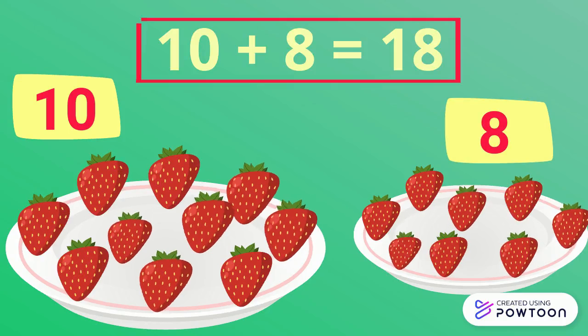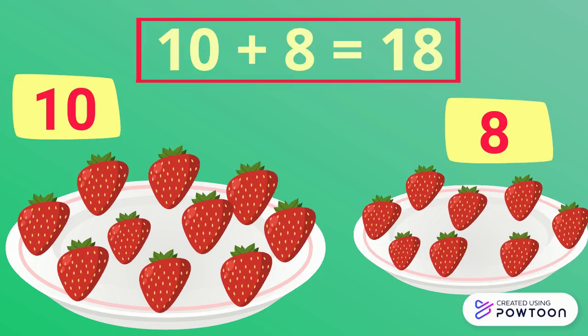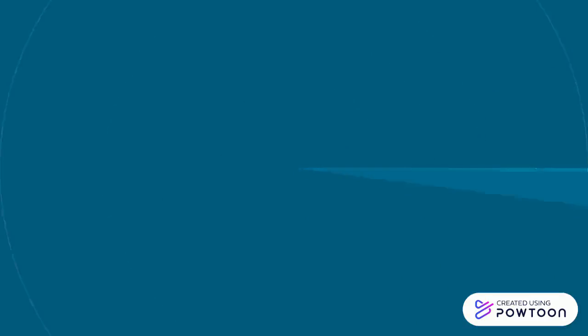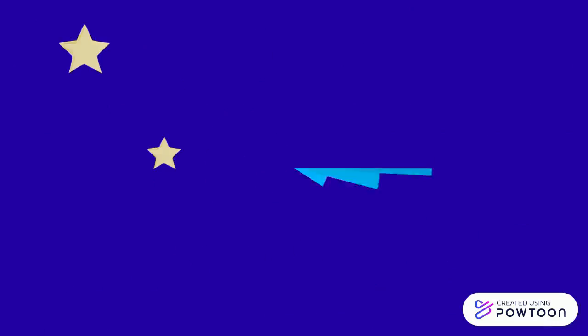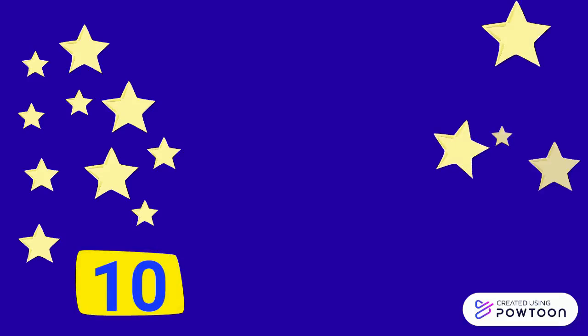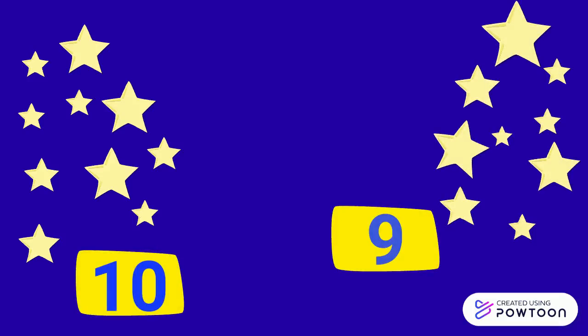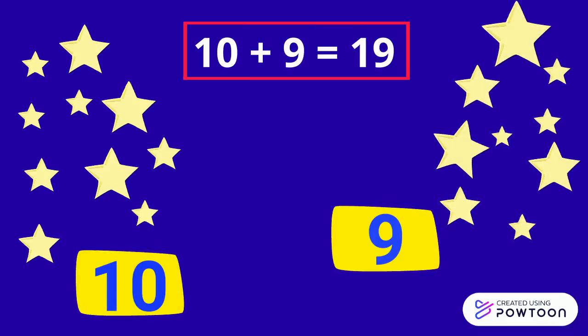10 plus 8 equals 18. 10 stars light up in the sky, and also 9 stars. The equation is 10 plus 9 equals 19.